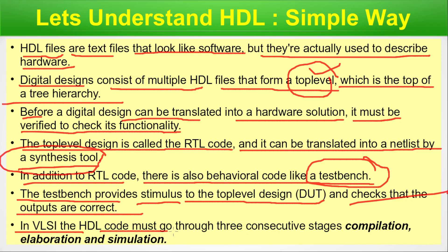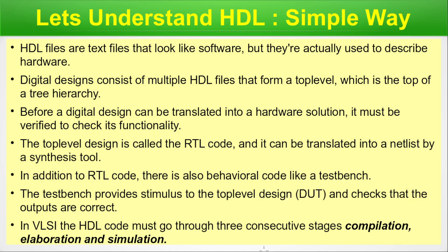In VLSI, HDL code must go through three consecutive stages: compilation, elaboration, and finally simulation. This is how we arrive at the result. In any standard industrial HDL simulator you will find these three steps — either individually, or there will be a wrapper to combine all of them and run in one go. However, internally there will always be three different steps.